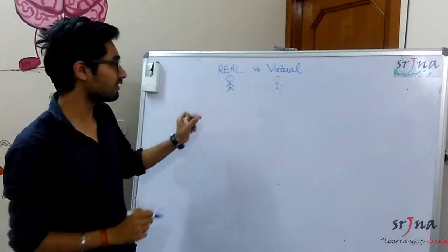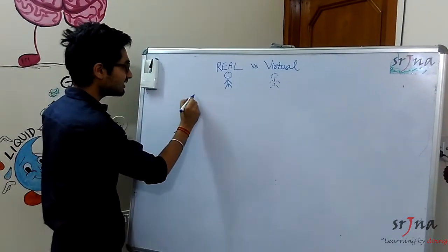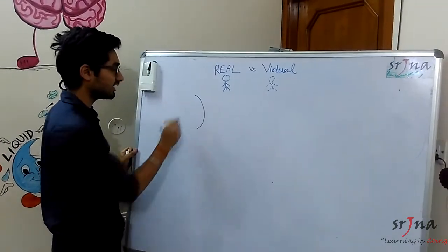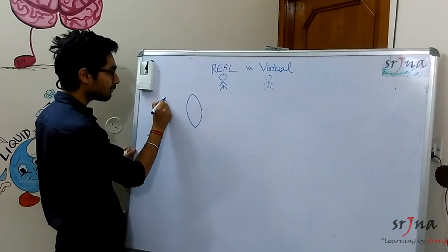Today we will discuss about the difference between a real image and a virtual image. So to understand this let's take the help of a convex lens and let's see there is a bulb.